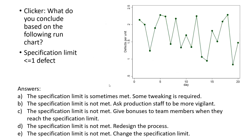We have five possible answers here. One: specification limit is sometimes met — some tweaking required. Two: specification not met — we have to be more vigilant. Three: specification not met — give bonuses to teams when they reach the specification limit. Four: specification not met — redesign the process. Five: specification not met — change the specification limit.